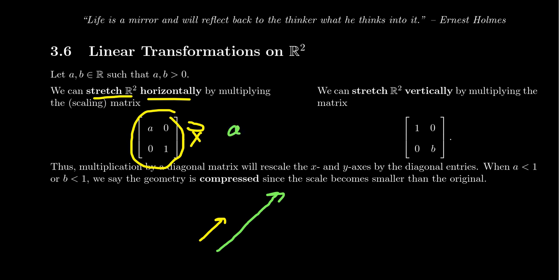If you're actually going to stretch the vector, you're assuming that the scalar A has a length greater than 1 — that's what we mean by stretch. On the other hand, if the scalar A is positive but its value is less than 1, like 1/2, we actually think of that as a compression — the vector is going to get shorter in length. So if A is larger than 1, you're going to stretch the vector horizontally. If A is less than 1 but still greater than 0, you'll horizontally compress it. Dilation is sometimes used as a synonym for stretching, and contraction for compression.